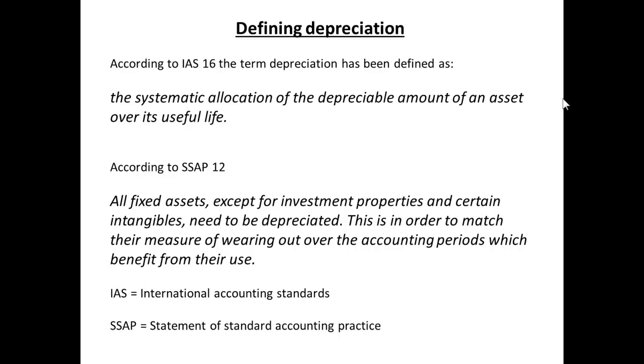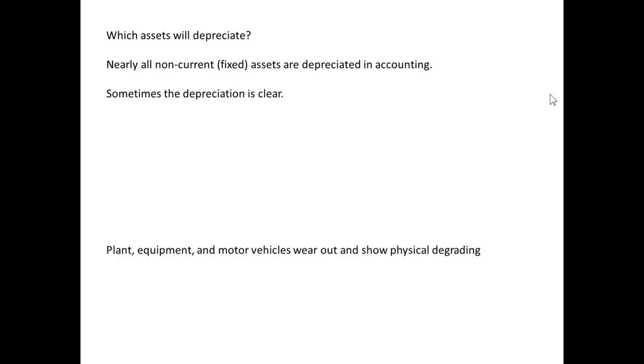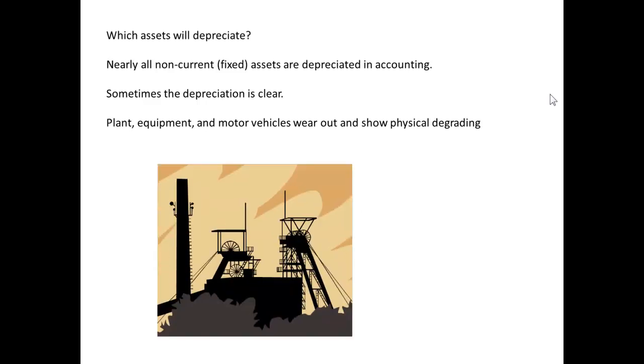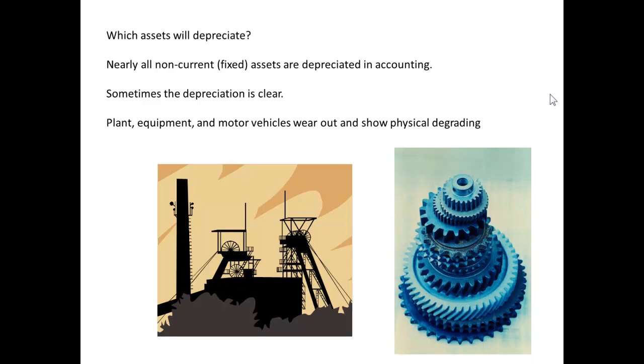I like two terms there: it matches the measure of wearing out, and it also refers to the benefits from their use. So which assets depreciate? Nearly all the non-current or fixed assets are depreciated in accounting. Sometimes the depreciation is fairly clear. If we have plant, equipment, or motor vehicles, these will wear out and they will be physically degrading — in other words, we can see the wearing out.